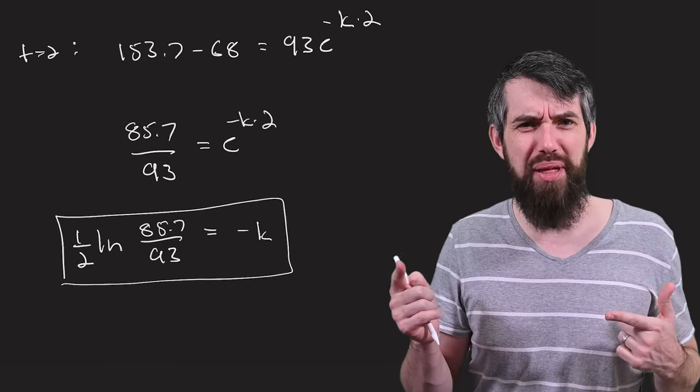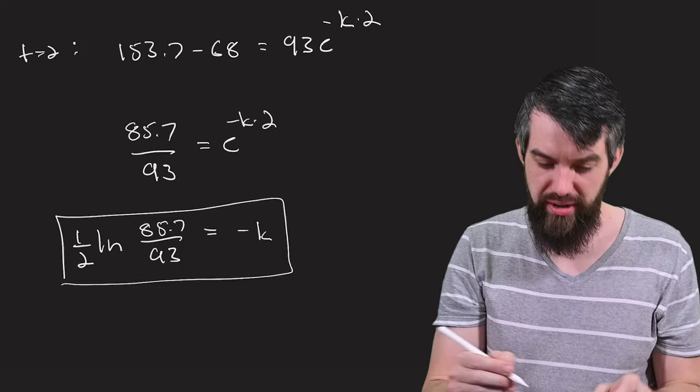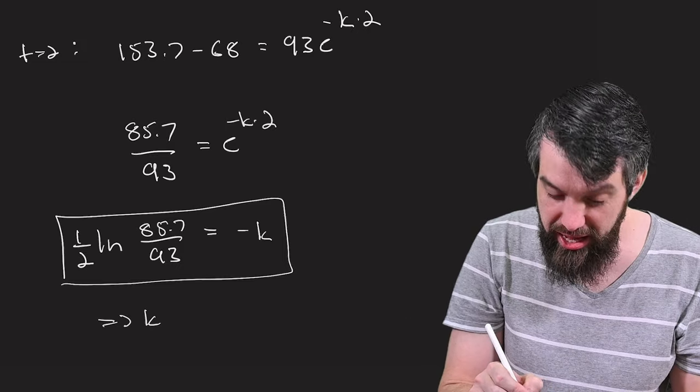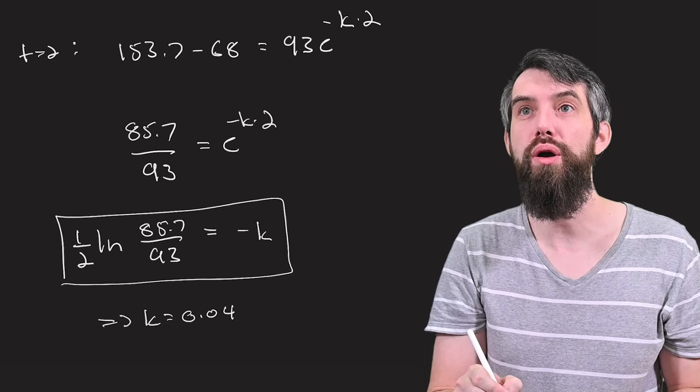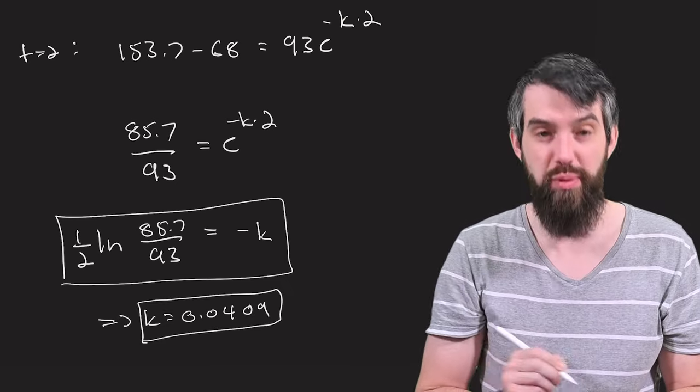This is much too complicated for me to do in my head, so I'm going to go to the calculator. And the calculator tells me that K is equal to 0.0409. I suppose that's enough decimal places.